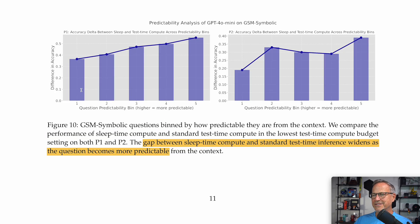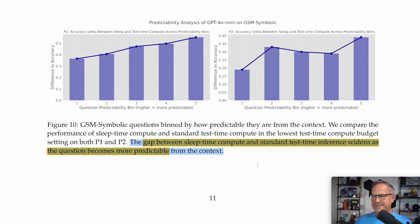This figure shows that: for unpredictable questions, sleep time compute doesn't benefit as much, all the way up to very predictable questions where the difference in accuracy is very large. The gap between sleep time compute and standard test time inference widens as the question becomes more predictable from the context.